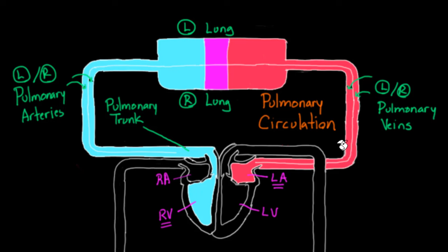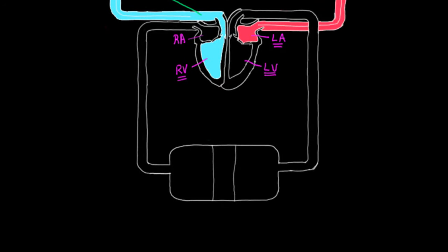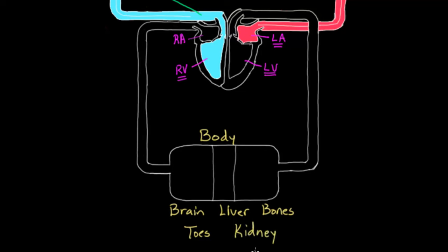Now let's talk about the second part: the systemic circulation. The journey starts with the left ventricle, which sends blood out to the body — meaning all organs and tissues: the brain, liver, bones, fingers, toes, everything. Blood goes initially through a giant vessel called the aorta. The aorta branches and splits many times to reach the various tissues and organs.